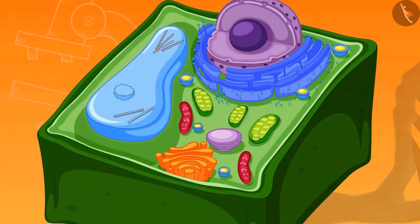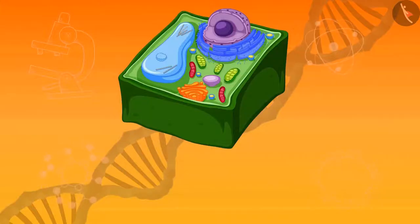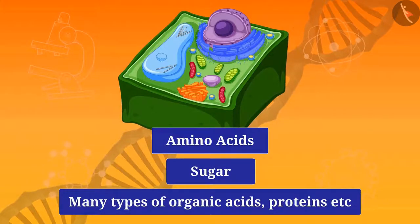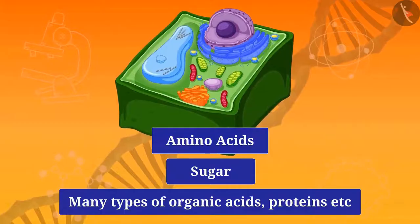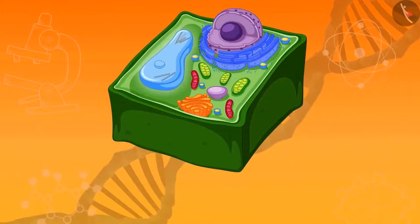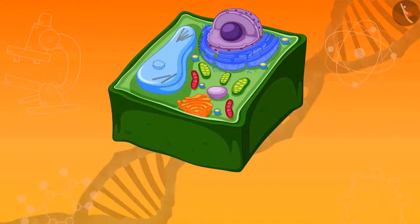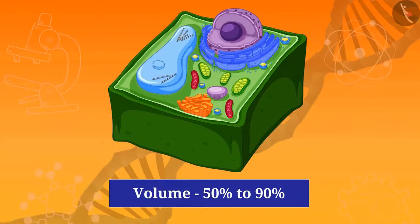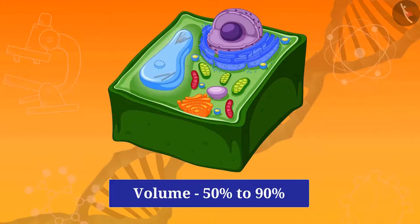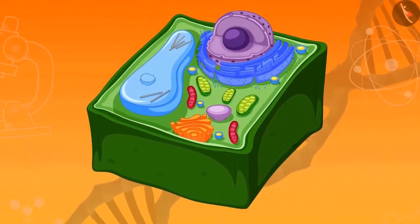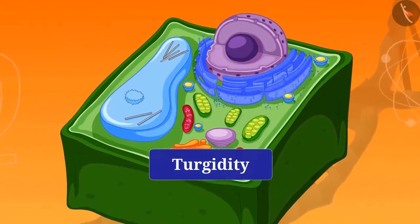Now we will learn about vacuoles — the storage spaces in the cell. Vacuoles collect liquids and solid substances such as amino acids, sugars, many types of organic acids, and proteins, which are essential for plants. Their size is small in animal cells, whereas in plant cells vacuoles are very large — in some plant cells they measure 50% to 90% of the cell's volume, which pushes the nucleus near the plasma membrane. In plant cells, vacuoles are full of cell sap and provide turgidity and rigidity to the cell.